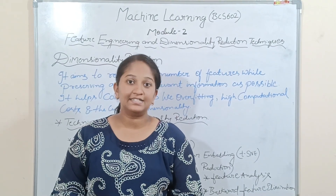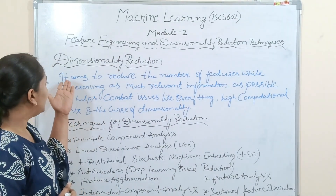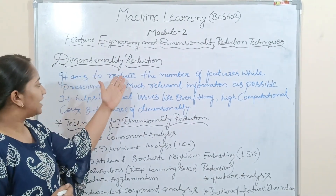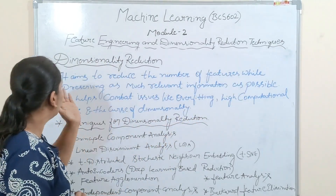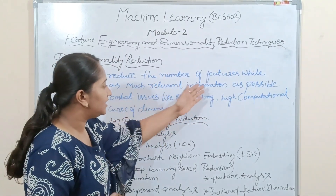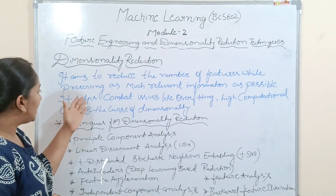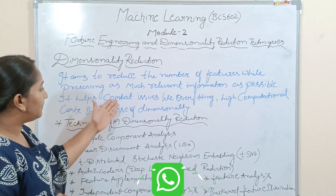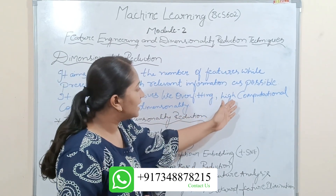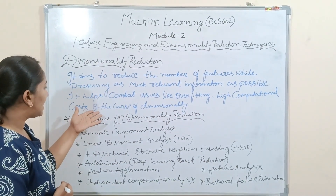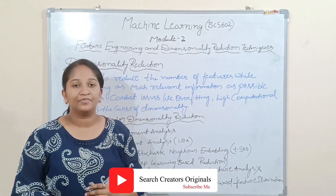The next topic is dimensionality reduction. It aims to reduce the number of features while preserving as much relevant information as possible. It helps combat issues like overfitting, high computational costs, and the curse of dimensionality.